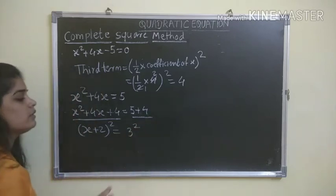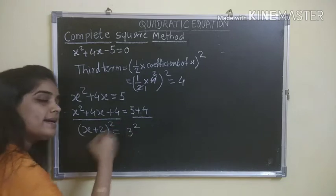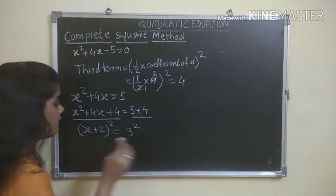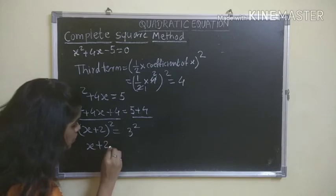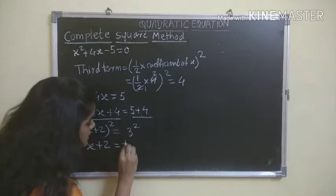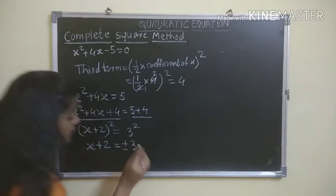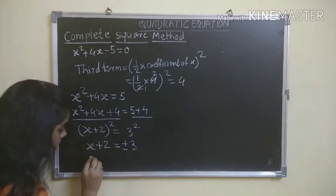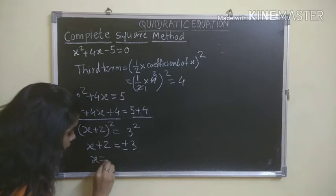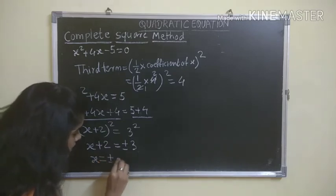Now I'll take the square root of both sides. Square root gives me x + 2 = ±3. Now to find the value of x, x = ±3 - 2.